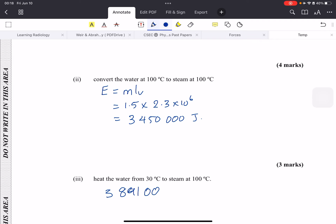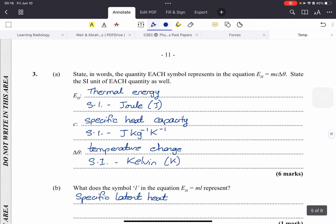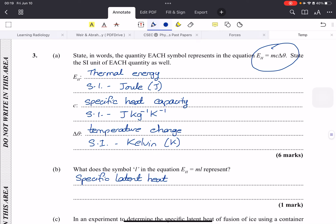State in words the quantity each symbol represents in our equation E equals m c delta theta. Very easy. E is the thermal energy, and the unit of energy is the joule. c is the specific heat capacity. Anywhere they will give you the units when they're giving you the specific heat capacity, so you just put it in. And finally, delta theta is the temperature change, and that is obviously the SI unit will be kelvin.